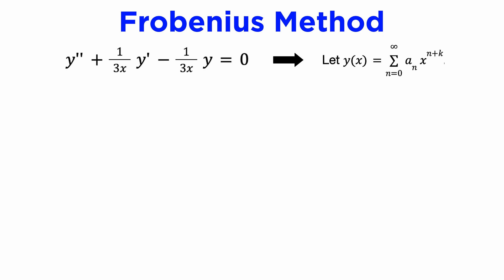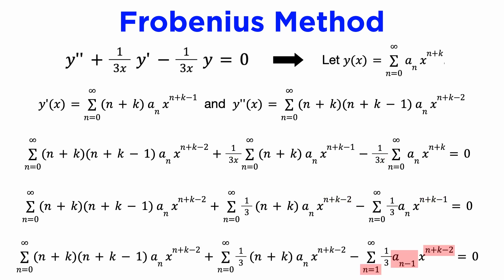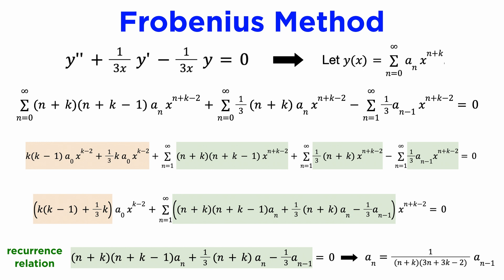We begin by substituting in a power series for y, except in the Frobenius method we modify the exponent from n to n + k, where k is an unknown constant. As before, we then differentiate this and substitute it into our differential equation in standard form, absorb the x terms into the summation, re-index the summations to make all the powers of x the same, pull out the first term of the first two summations to make their indices all start at n = 1, and then combine the summations and set everything inside and outside the summation to 0. When we set the expression inside the summation to 0, we will generate our recurrence relation between the terms of our series aₙ, just as before, but now there is this unknown constant k.